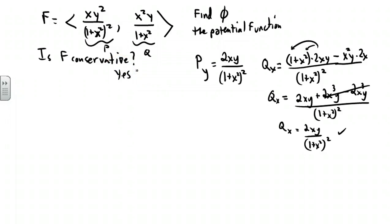Now, to go about trying to find the potential function phi, we'll do the following. We're always going to integrate p with respect to x first. Let's go ahead and do that. Now that's not going to be so easy, but it's going to require a u substitution.